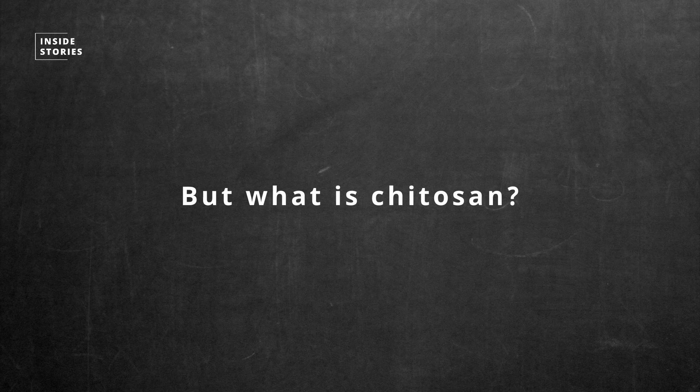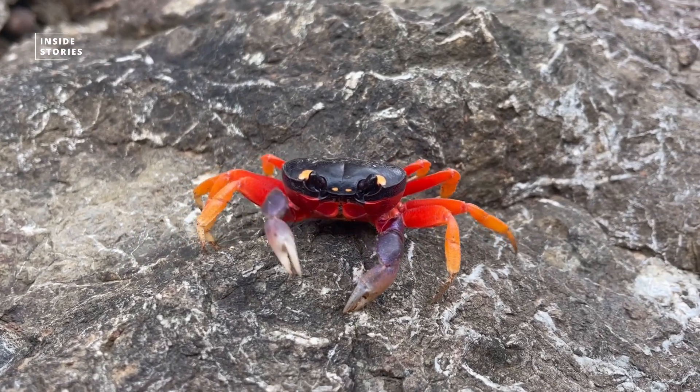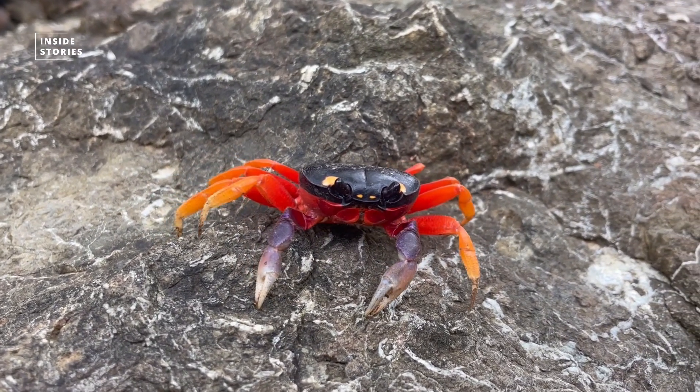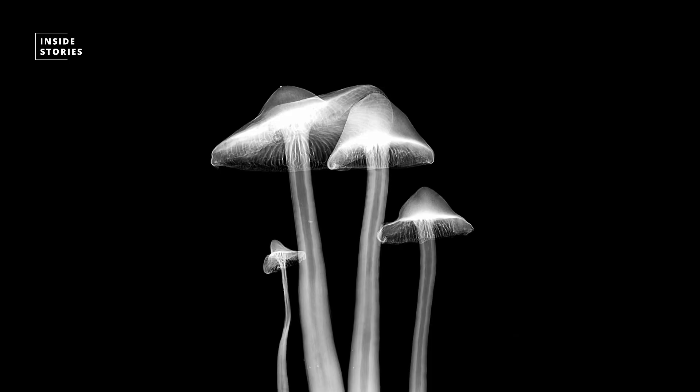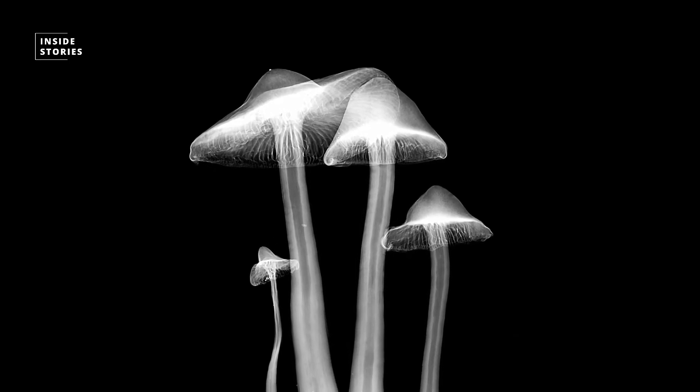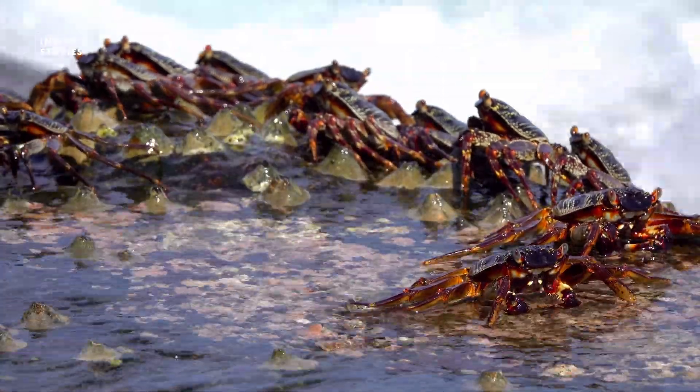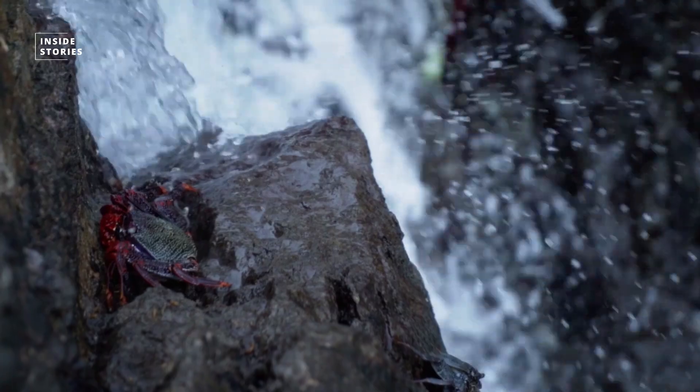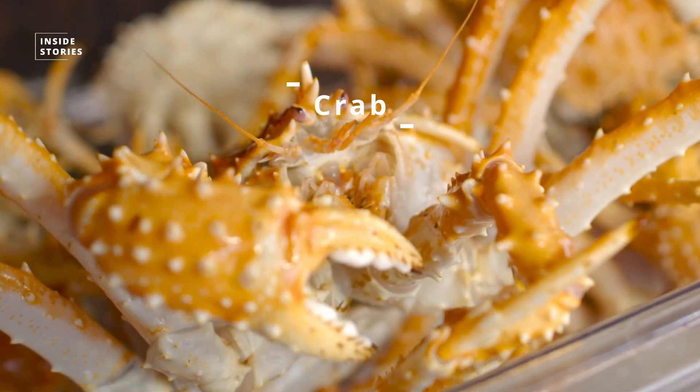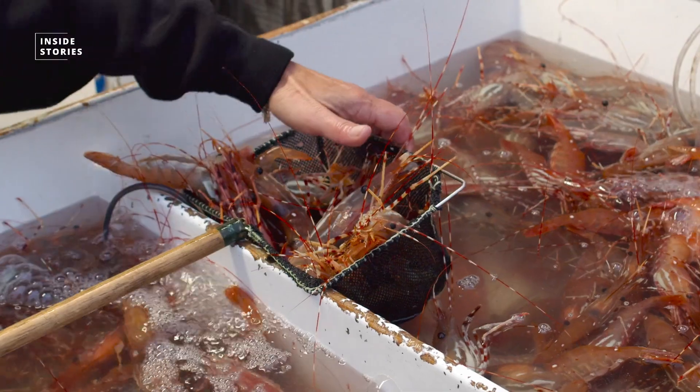But what is chitosan? Chitosan is a derivative product of chitin, one of the most abundant polymers in nature. It's found for example in the cell walls of fungi, or as mentioned in the beginning, the exoskeletons of crustaceans, which are also the largest source of chitosan, including crabs, shrimp and lobster, which can be easily obtained from seafood waste.